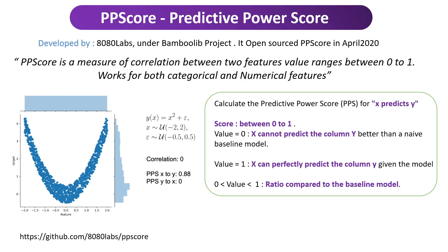PP score was developed by NITIT Labs and released under the Bamboo Blade project. They open-sourced it in April 2020 — it's a recent release. PP score is a measure of correlation between two features. The value ranges between 0 to 1 and works for both categorical as well as numerical features. Pearson, Spearman, and Kendall work only for numerical data; for categorical data we have chi-square test and ANOVA test. But PP score is a one-stop solution for all data types, whether categorical or numerical.